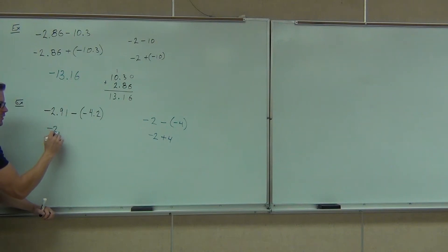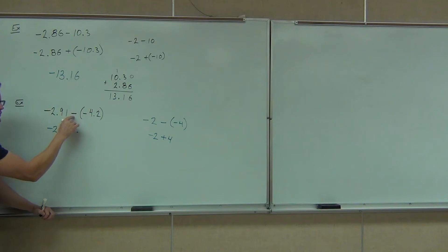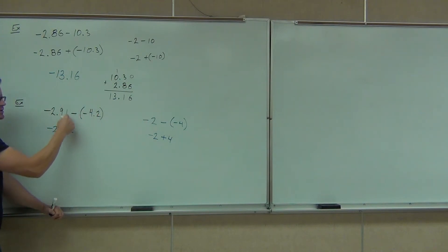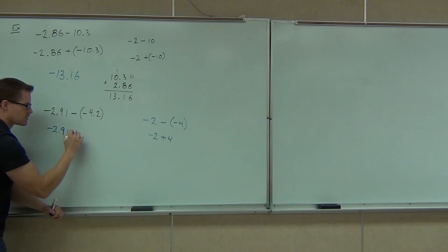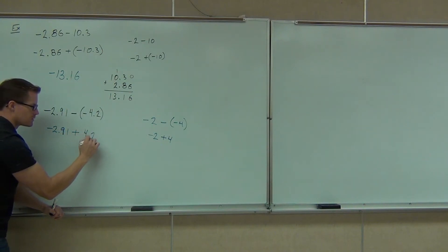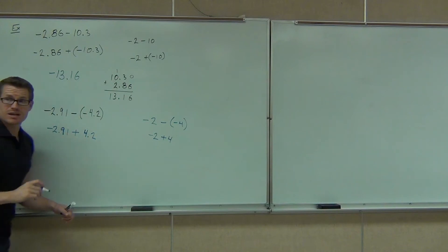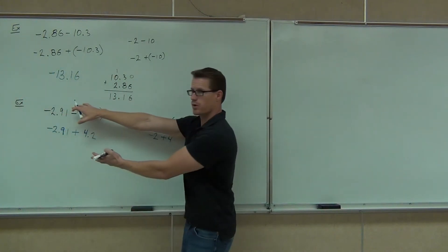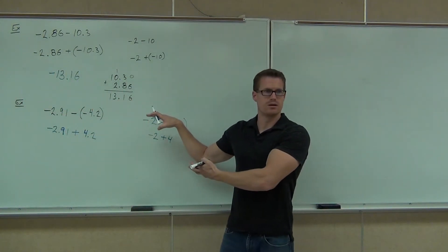We're going to have negative 2.91, but notice we still have a minus — a negative — just like we had over here. What does this become, folks? Can you guys see the similarity between this problem that we're working on and the one we just mastered already?